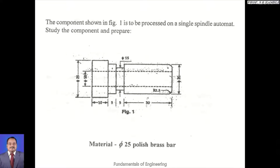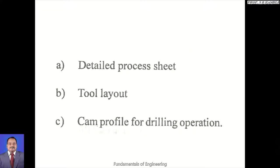We'll prepare a process sheet for this component. The component diagram is shown, having a final operation. The material for this job is brass bar with 25mm diameter, and all operations are performed on a single spindle automate, which is a semi-automatic machine. For this component we are preparing a detailed process sheet, tool layout, and cam profile for drilling operation. We will also calculate the production rate per hour.